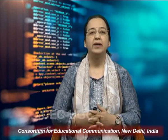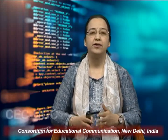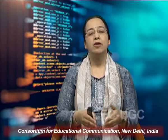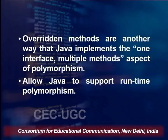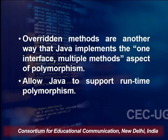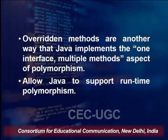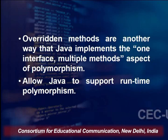Polymorphism is an essential pillar of the object-oriented programming paradigm. When we talk about overriding, it basically allows a parent class to specify the methods that are going to be common to all of its subclasses or child classes, while allowing subclasses to define their specific implementation for all or some of those methods. Overriding is Java's way to implement one interface with multiple methods, and through this concept Java also supports runtime polymorphism.